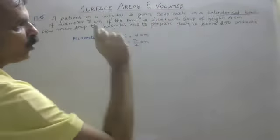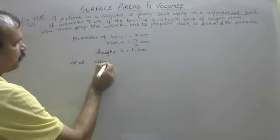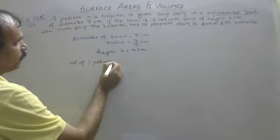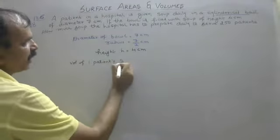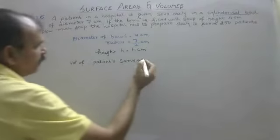How much soup the hospital has to prepare daily to serve 250 patients. So now we start with volume of one patient. What is our shape? Cylindrical shape. What is your formula? Pi r square h.